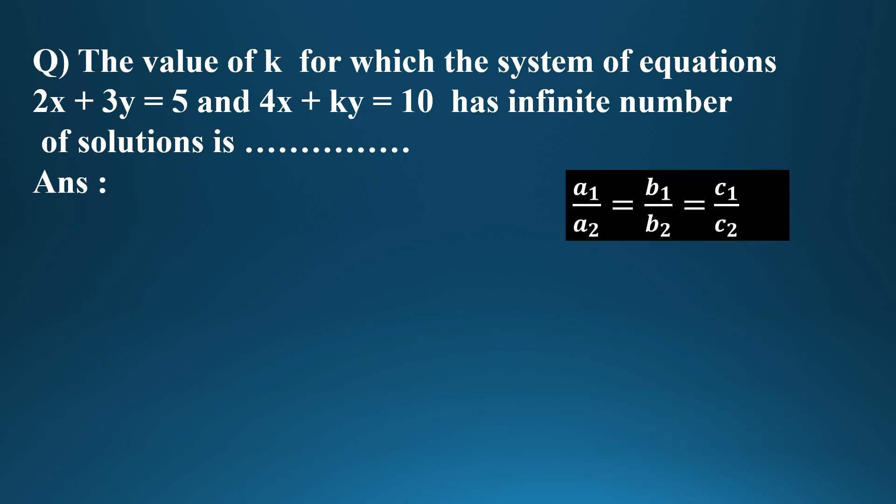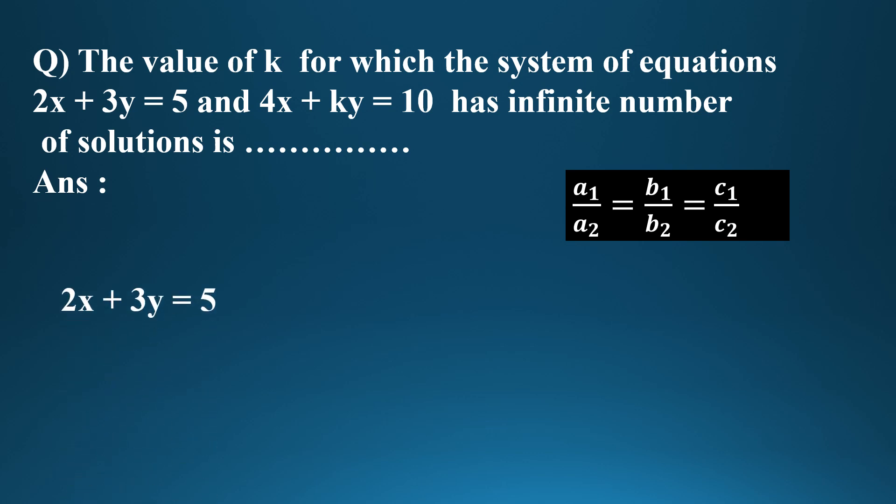For infinite solutions, the condition is a1/a2 = b1/b2 = c1/c2. The first equation is 2x + 3y = 5, so a1 = 2, b1 = 3, c1 = 5.